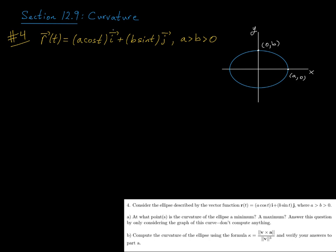So first note that the i and the j components, thinking back to chapter 11, they give us parametric equations for this ellipse centered at the origin, and since a is strictly greater than b, this ellipse has semi-major axis a and semi-minor axis b.